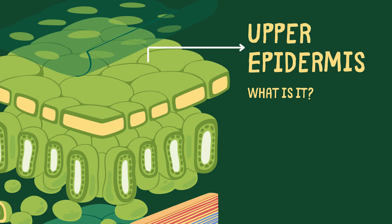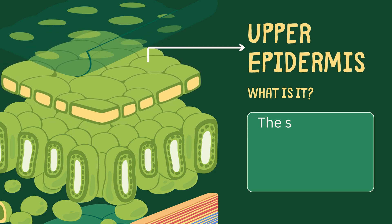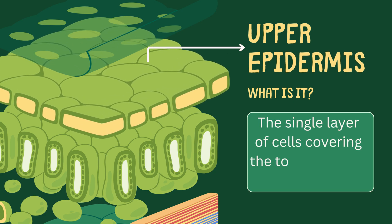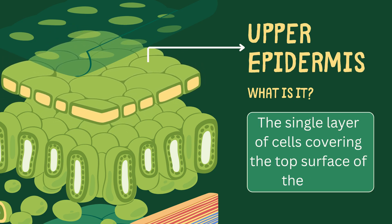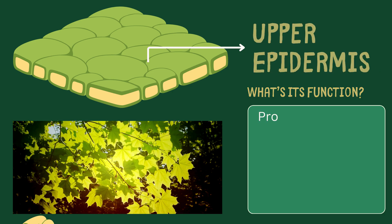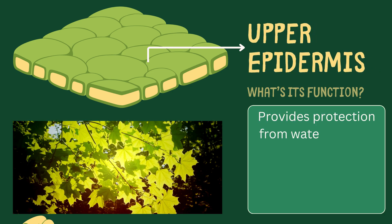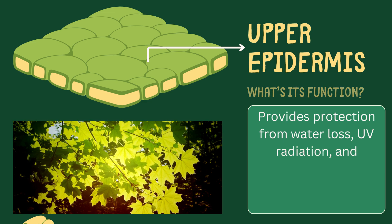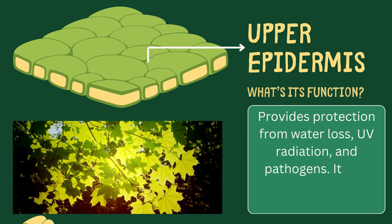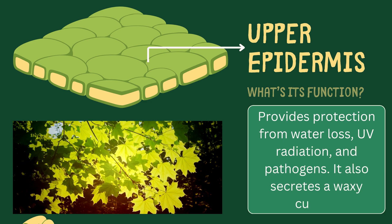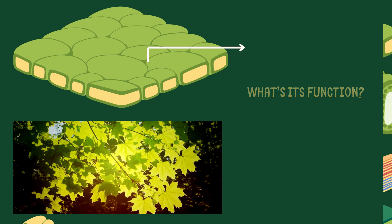Upper epidermis. The single layer of cells covering the top surface of the leaf. Upper epidermis provides protection from water loss, UV radiation, and pathogens. It also secretes a waxy cuticle.